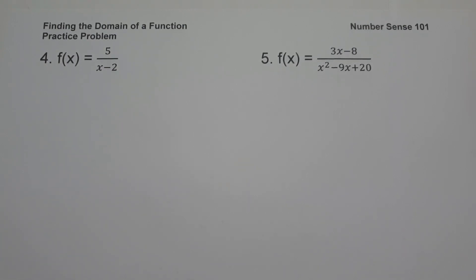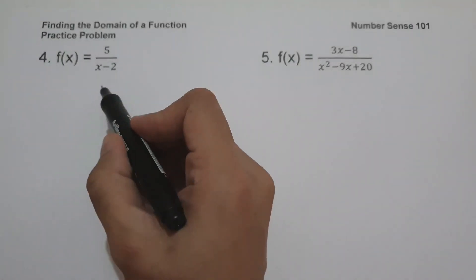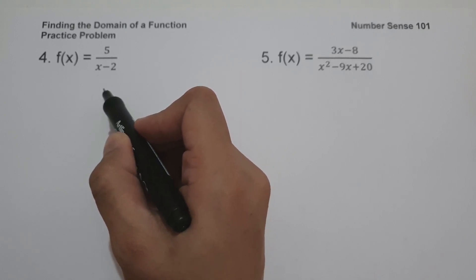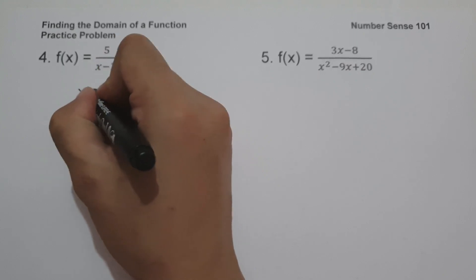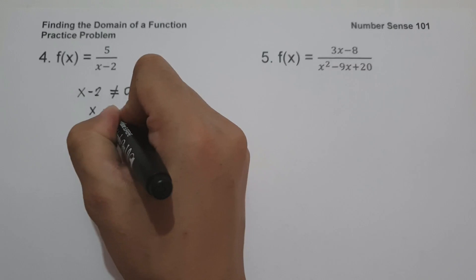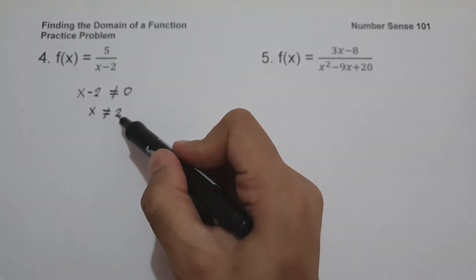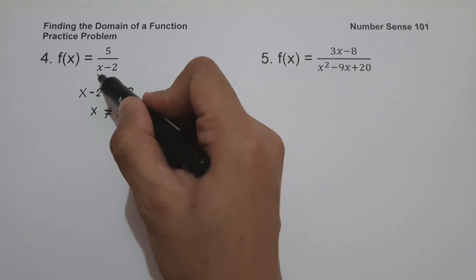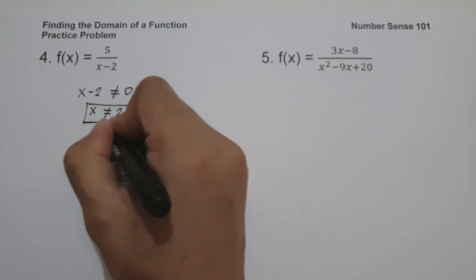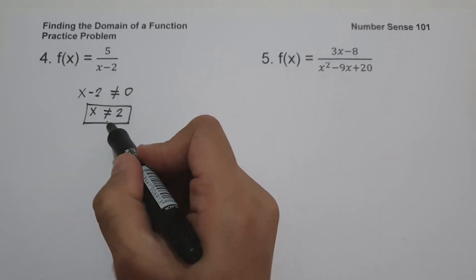For this next set of examples we are going to have a rational function. On number four, f of x is equal to 5 over x minus 2. To find the domain of a rational function, set the denominator not equal to zero. For this function, x can be anything except the value that produces zero in the denominator, so x minus 2 ≠ 0, meaning x cannot be positive 2.